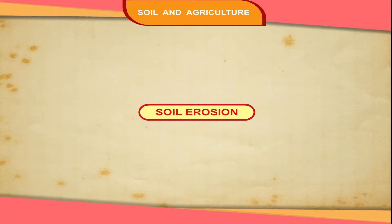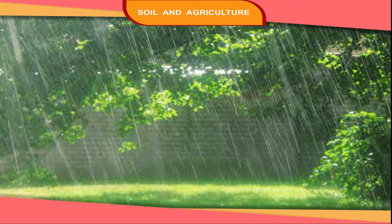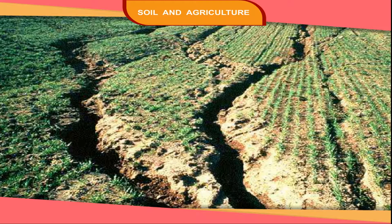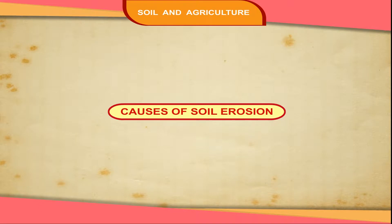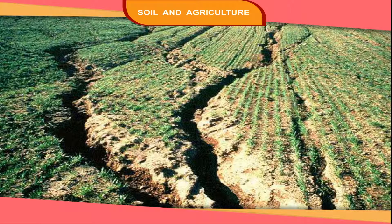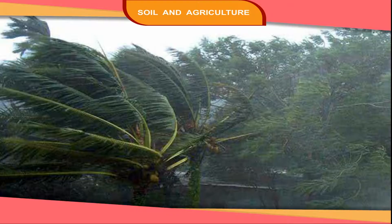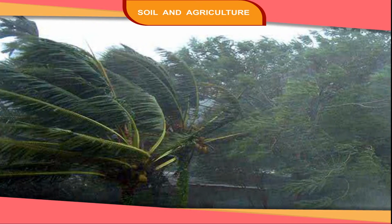Sometimes rain, rivers and winds carry away the top layer of soil. This is called soil erosion. The following are some reasons for soil erosion. Strong winds blow away the top soil of a dry area with little vegetation to a great distance.